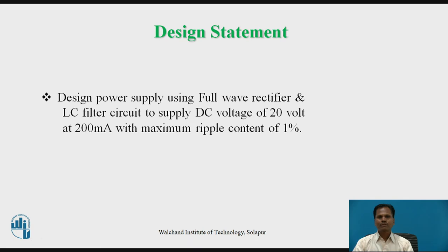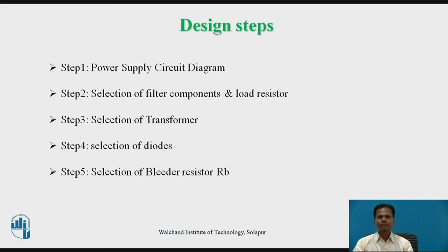Now let us take an example of power supply design. Let us design a power supply using a full-wave rectifier and LC filter circuit to supply a DC voltage of 20V at 200mA with a maximum ripple content of 1%. The design steps are: Step 1 — decide the overall circuit diagram; Step 2 — selection of filter components and load resistor; Step 3 — selection of transformer; Step 4 — selection of diodes; Step 5 — selection of bleeder resistor RB.